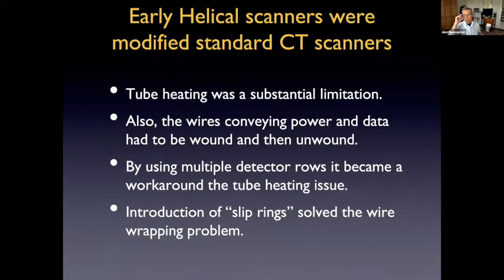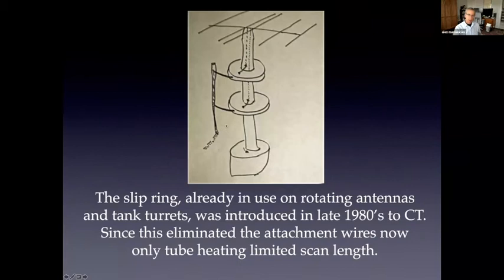The multiple detectors were introduced initially as a workaround for the tube heating. The idea being that if you could acquire the data in less time, that you might be able to get through a large area of the patient without having to worry about the tube overheating. And then slip rings were introduced to solve the wire wrapping problem. Now slip ring is basically shown here. I remember visiting my in-laws and they live in rural Vermont. And in the days of antennas, the way they would get some channels is they would rotate the antenna on the roof to try to maximize the reception. And in order to avoid the problem of wire wrapping, there would be contacts in between these two separate isolated rings.